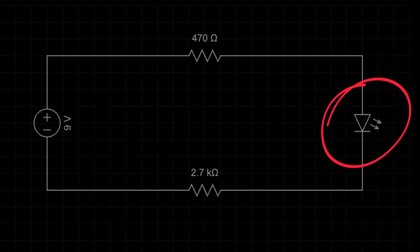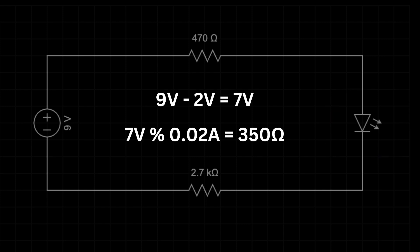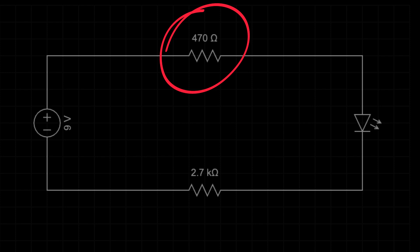Use Ohm's law to calculate the resistance. Subtract 2 volts from 9 volts to give us 7 volts. Divide 7 volts by 0.02 amps to get 350 ohms. I'm going to use a larger resistance of 470 ohms. The LDR is rated at around 2.7 kilo ohms.